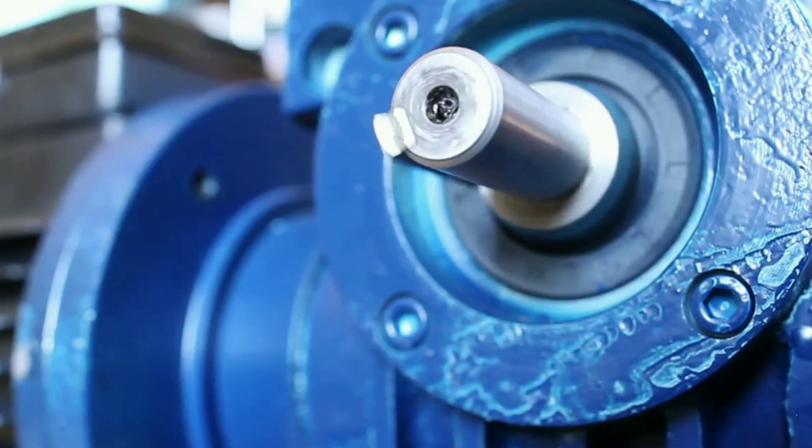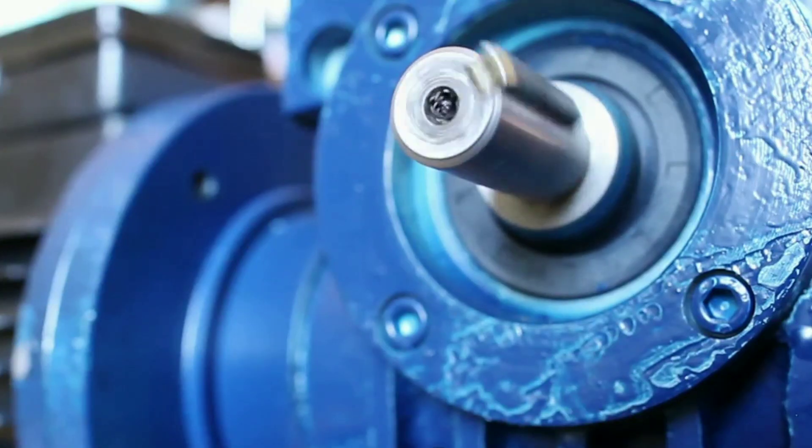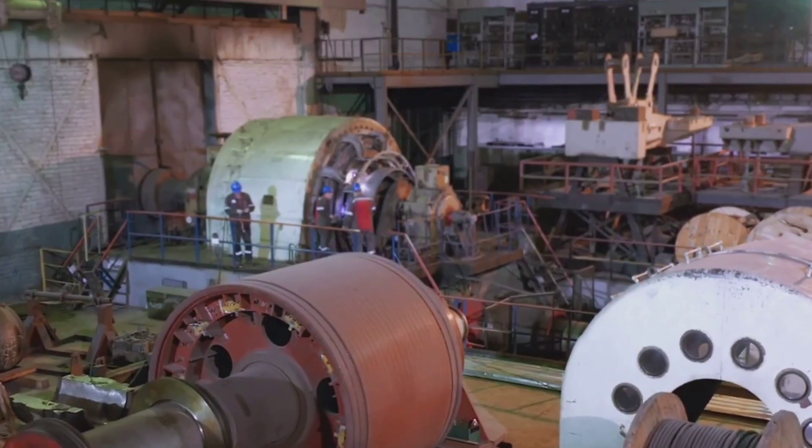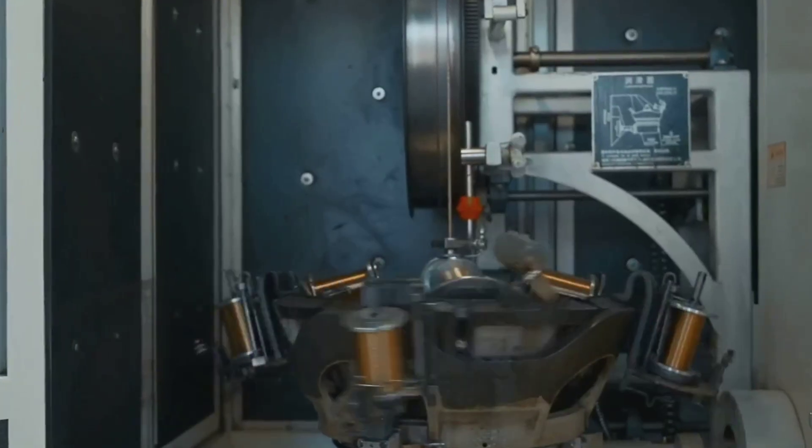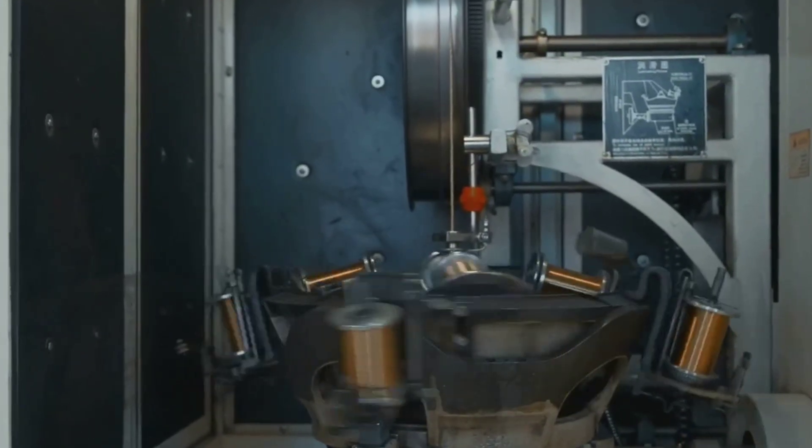A DC motor's magic comes from a few key parts working together. The stator is the stationary part, usually made of permanent magnets, creating a steady magnetic field. The rotor or armature is the spinning part at the center, packed with coils of wire around an iron core for strong torque.